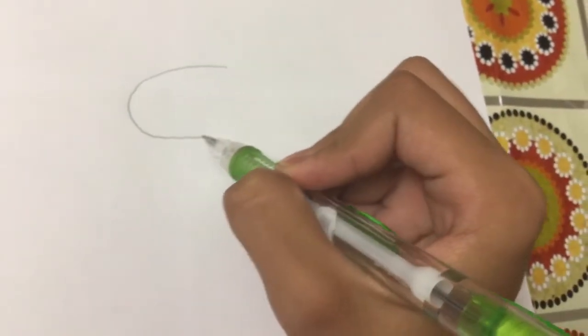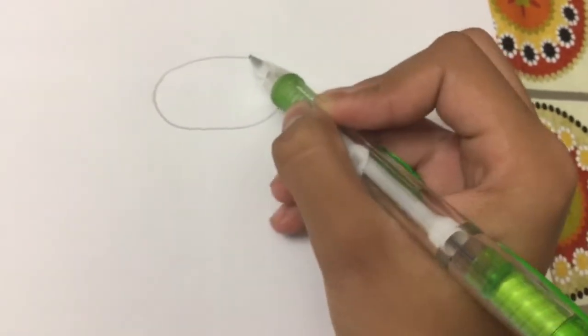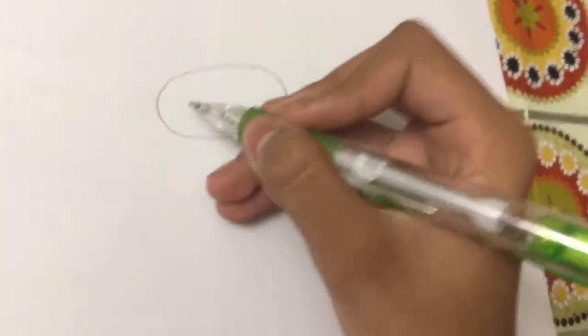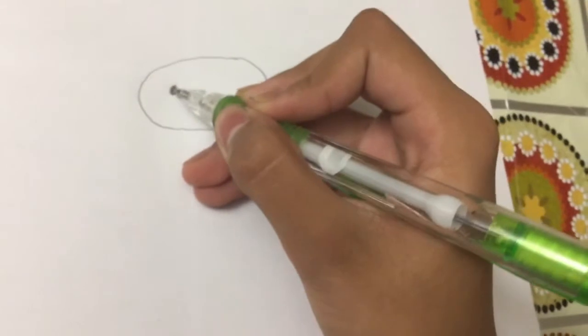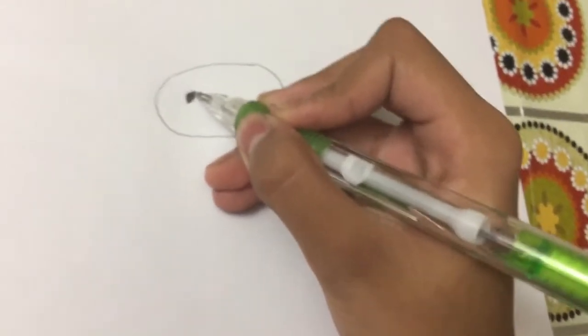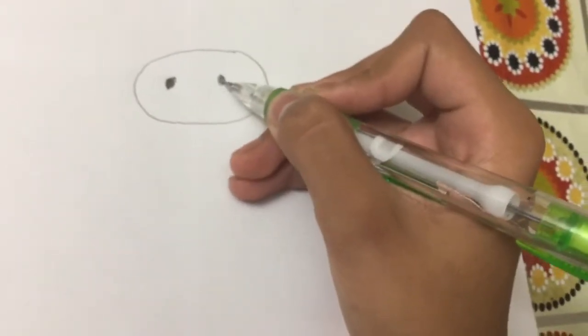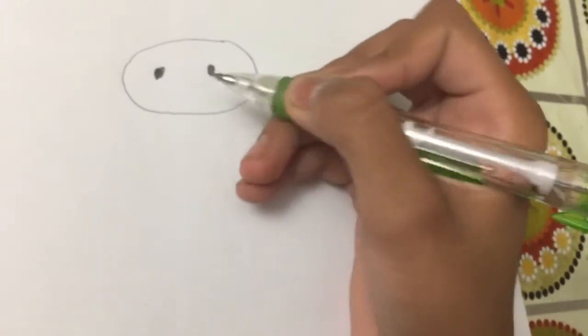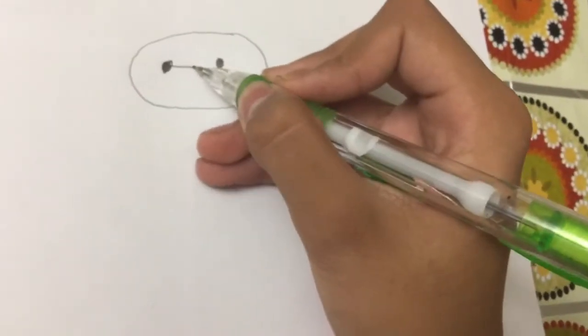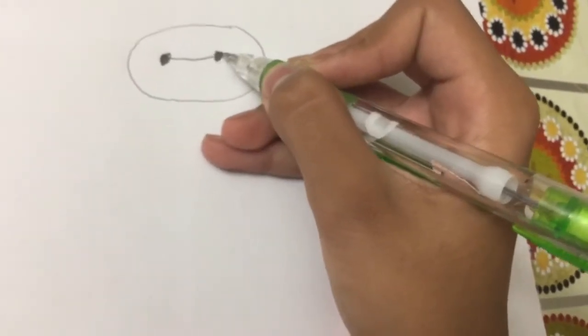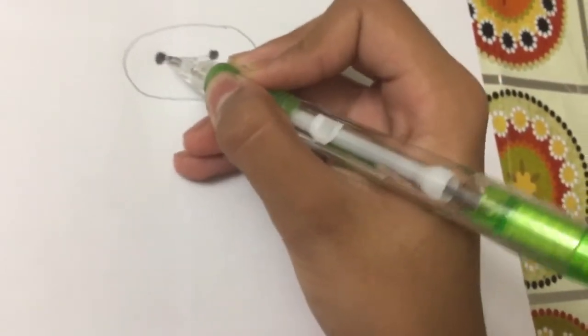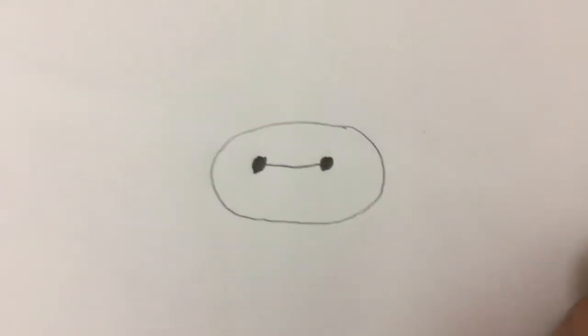First, for his face, we're going to draw an oval like this. And his eyes are just circles, right here. Then you connect them, just a little bigger. There you go, so that's Baymax's face.